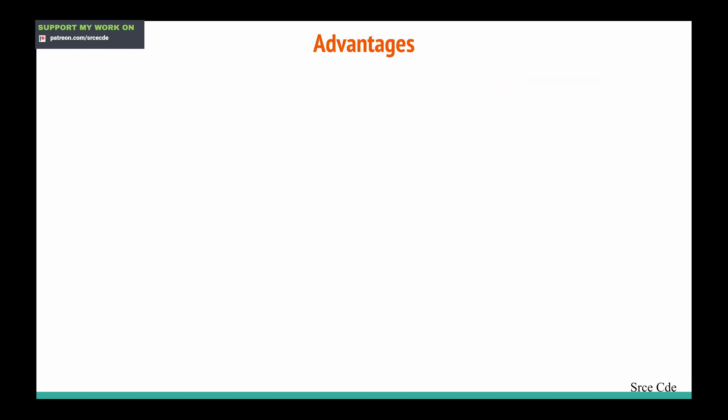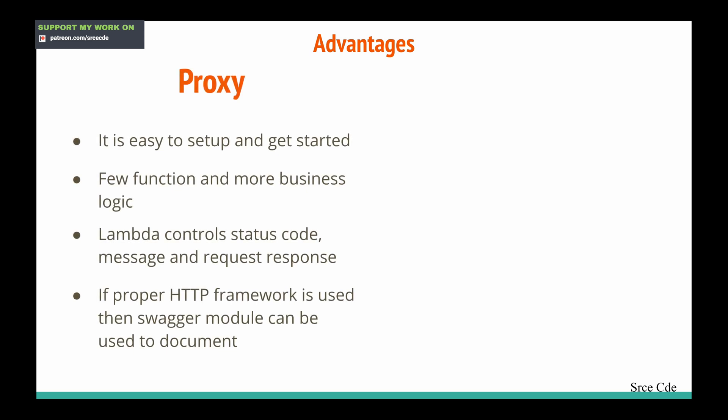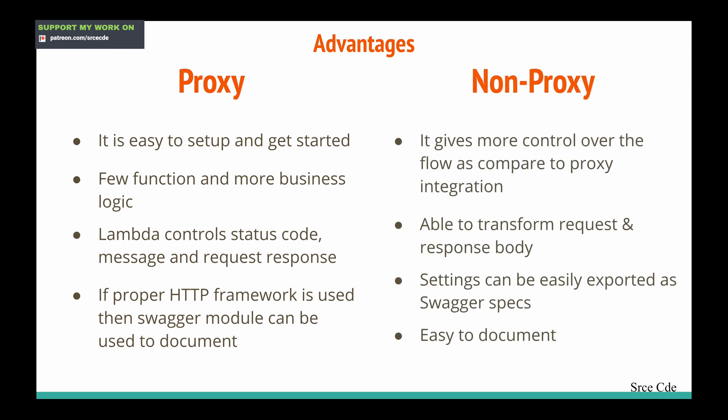Now let's look at the advantages. Within proxy integration it is really easy to set up, we have few functions and more business logic at the backend, and Lambda controls everything — status code, message, request, and response. If a proper HTTP framework is used, a Swagger module can be used to document from the backend. For non-proxy or custom integration, it obviously gives you more control over the flow, we can transform request and response as required, and settings can be easily exported as Swagger or OpenAPI 3.0 specs for easy documentation.